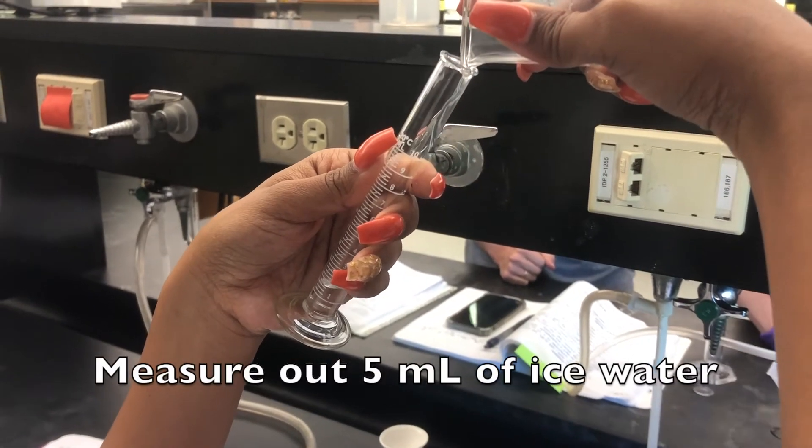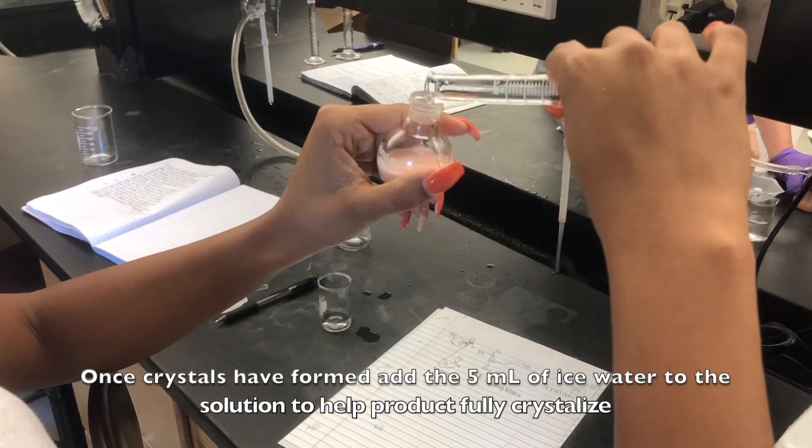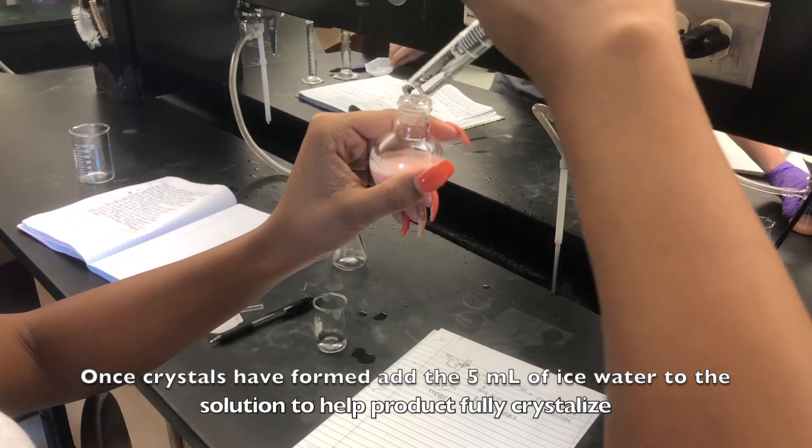Measure out 5 milliliters of ice water. Once the crystals have formed, add the ice water to the solution to help it fully crystallize.